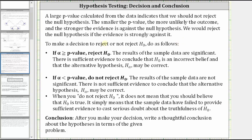To make a decision as to whether we reject or not reject the null hypothesis, we do as follows. If alpha is greater than or equal to the p-value, we reject the null hypothesis. The results of the sample are significant. There is sufficient evidence to conclude the null hypothesis is an incorrect belief and that the alternative hypothesis may be correct. If alpha is less than the p-value, we do not reject the null hypothesis. The results of the sample data are not significant. There is not sufficient evidence to conclude that the alternative hypothesis may be correct.